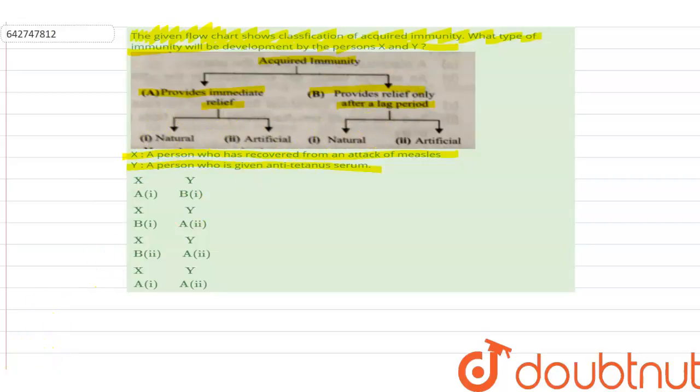We have natural and artificial. Now let us talk about person X first. X has suffered from an attack of measles, so the body has produced antibodies against it.